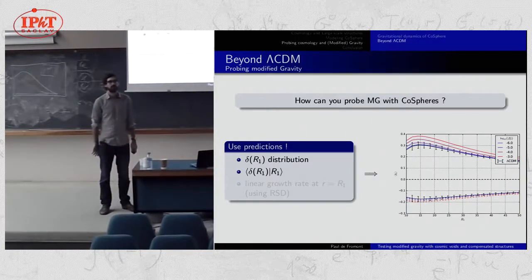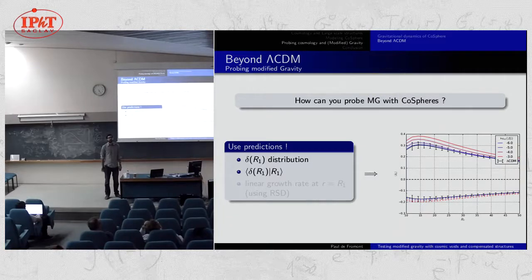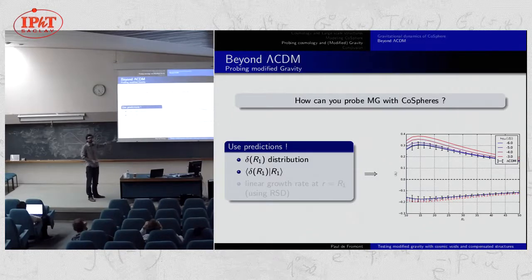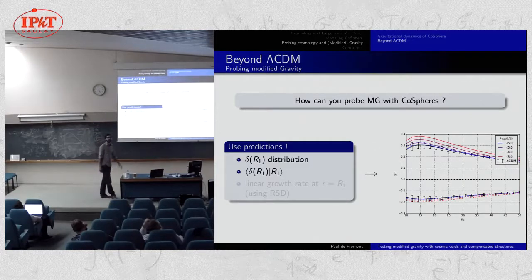Question: What you call modified gravity is f(R), and the parameters you're using are f_R0 = 10⁻³ — which is a huge parameter. If you reduce that to more reasonable parameters like 10⁻⁶, do you still get that strong signal? Response: Of course the signal is less strong, but here I just show Poisson error bars to illustrate something. If you're able to measure this very precisely, then you could use this to probe modified gravity efficiently. 10⁻³ is ruled out, we know it — this is just to illustrate. I don't want to prove I can measure it; I just want to define something that can be used as new probes.